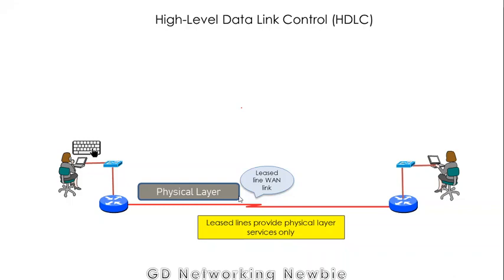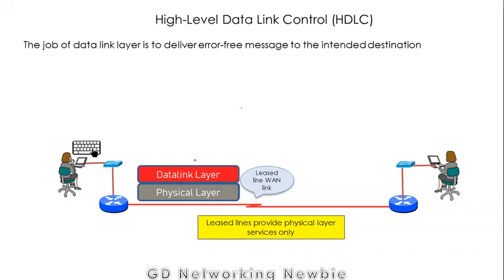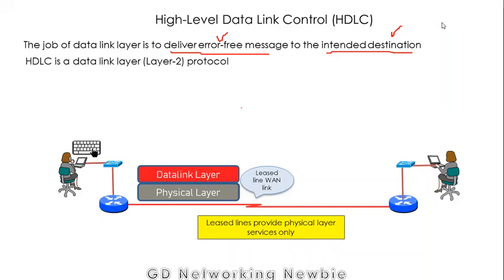For jobs such as addressing, error checking, and defining the start and stop of a frame, we need the services of the data link layer. The principal job of the data link layer is to deliver error-free messages to the intended destination, meaning error checking and access mechanisms must be present. For leased lines, HDLC is the answer, which is why we are studying it today.